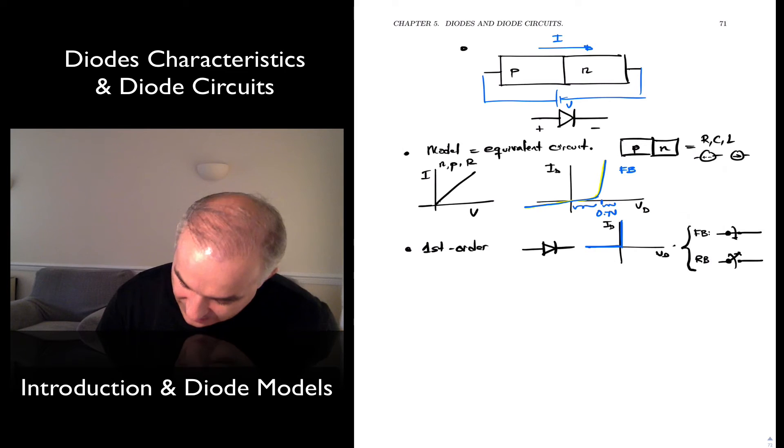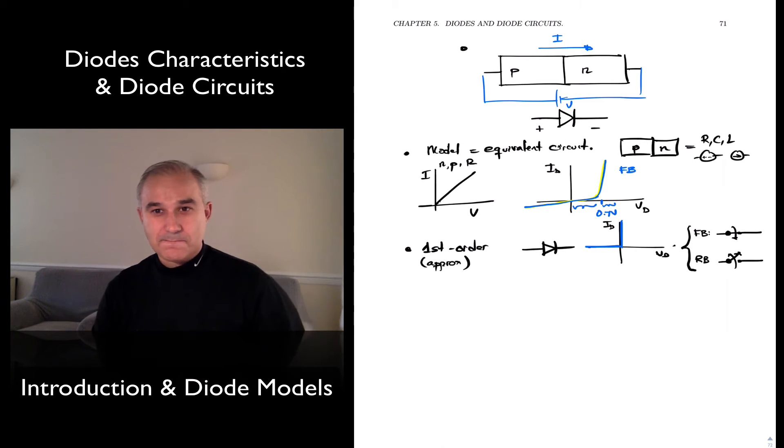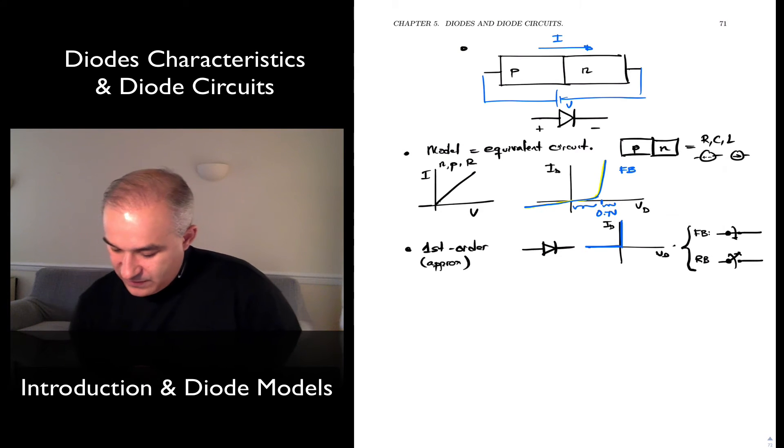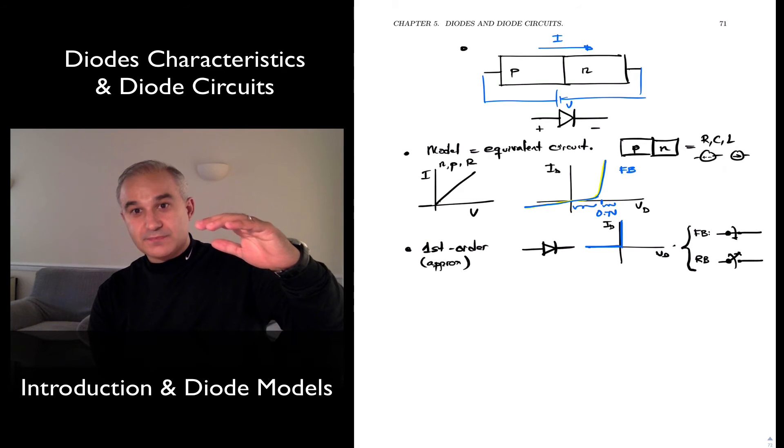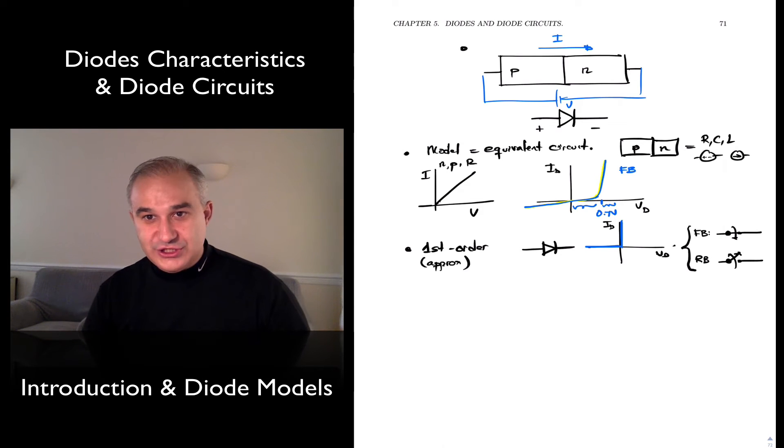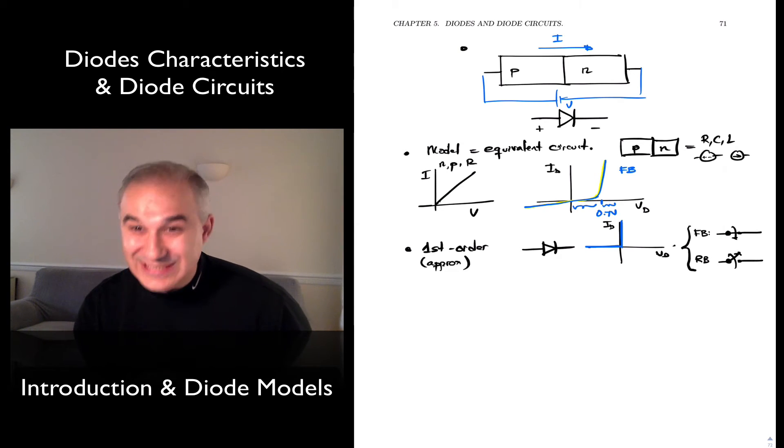Think of a model as an approximation, a first-order approximation. And this model is going to work quite well, especially when the voltages that you're working with are quite large compared to the 0.7 volts that we know for a silicon diode.